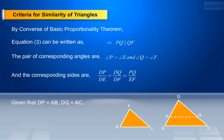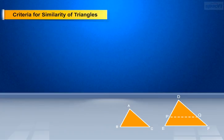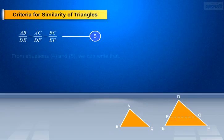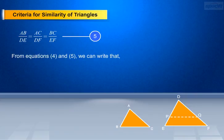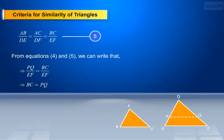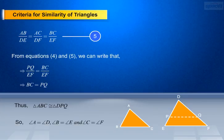Given that DP equals AB and DQ equals AC, this implies that AB/DE equals AC/DF equals PQ/EF — make it equation 4. Given that AB/DE equals AC/DF equals BC/EF — make it equation 5. From equations 4 and 5, we can write PQ/EF equals BC/EF, which implies BC equals PQ. Thus triangle ABC is similar to triangle DPQ, so angle A equals angle D, angle B equals angle E, and angle C equals angle F.